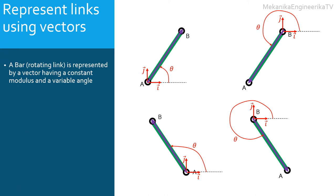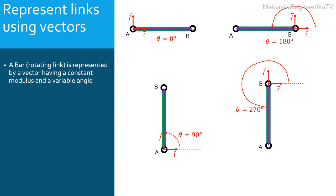The angle of the vector is always considered starting from the I vector of the plane basis. The basis vectors I and J are represented at the origin of the vector position. If the bar is horizontal and the vector position is in the same direction as I, the angle equals 0. If the vector is in the opposite direction to I, the angle is 180 degrees. If the bar is vertical and the vector is in the same direction as J, the angle is 90 degrees. If the vector position is in the opposite direction to J, the angle is 270 degrees.